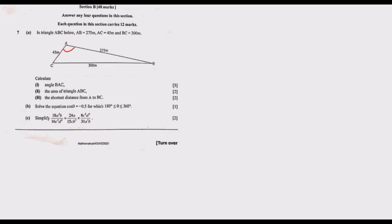Since we haven't been given any angle, we can't use the sine law. The cosine law requires that you have at least one angle and the opposite side — so that's not quite right either. Actually, the only option is the cosine law, which requires that you have at least all the sides. If you've been given all the sides, you can use the cosine law.